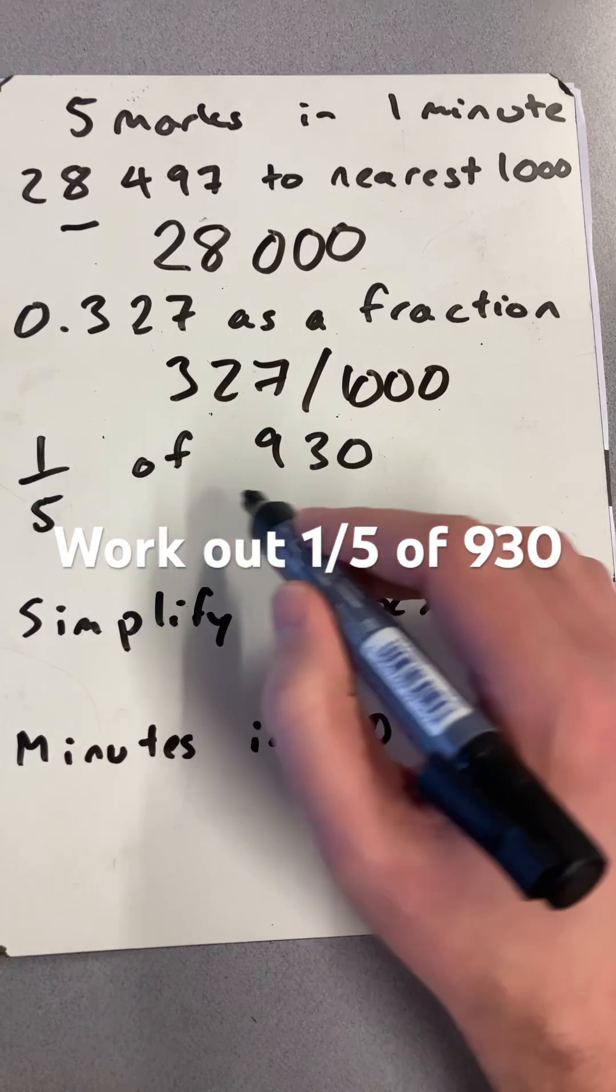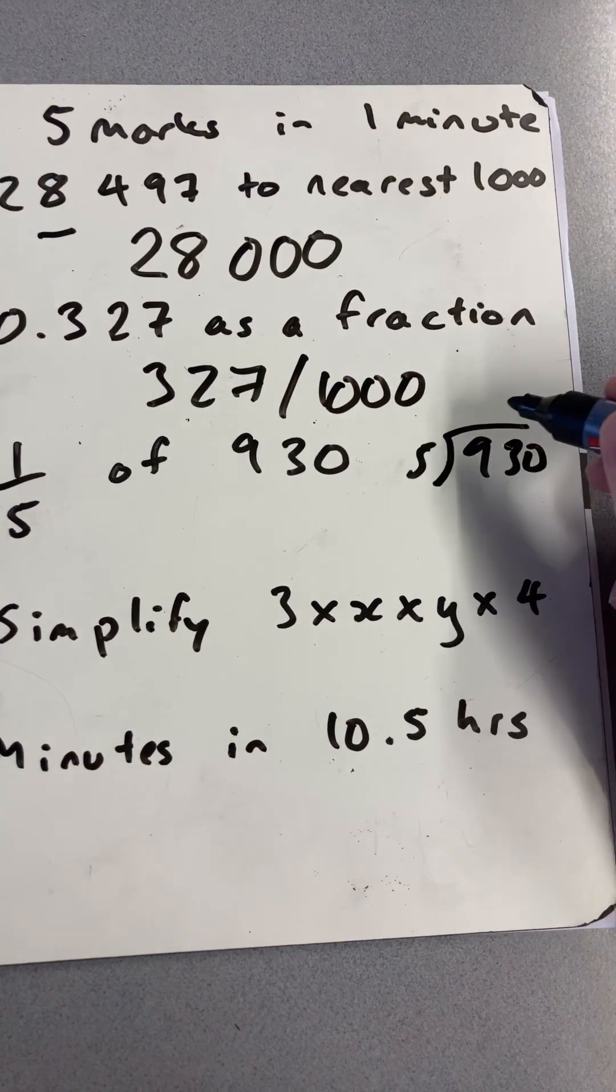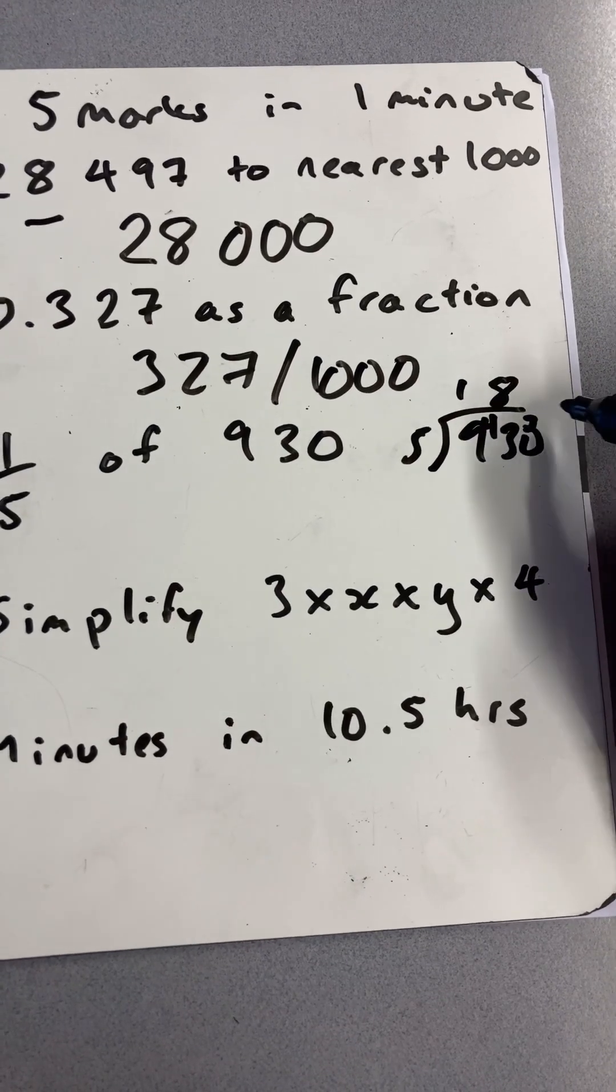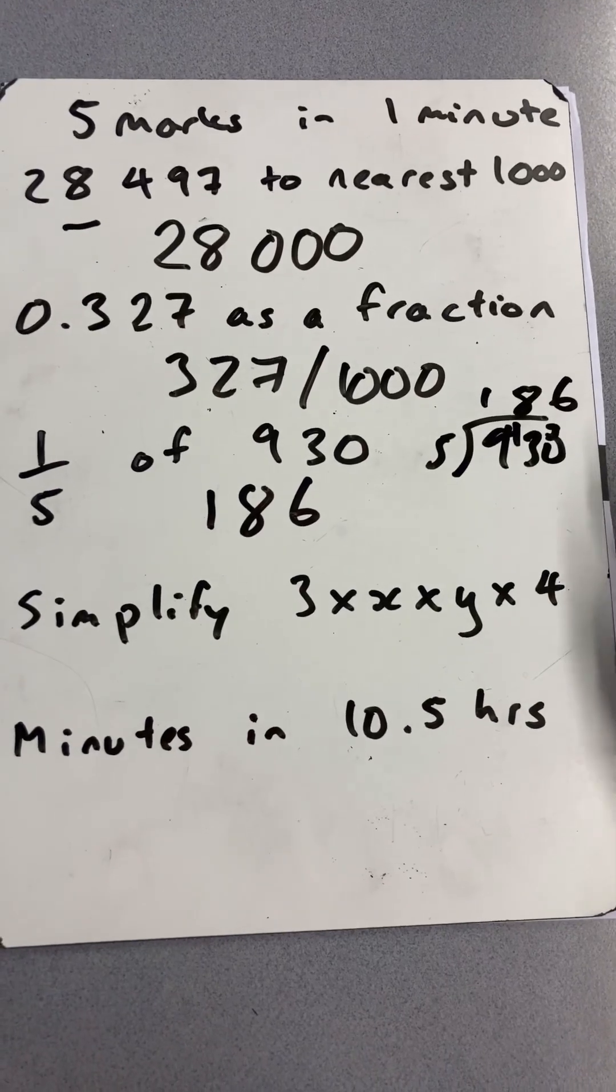One-fifth of 930. Take 930, divide it by 5: 1, carry the 4, 8, carry the 3, 6. So the answer is 186, using some division there.